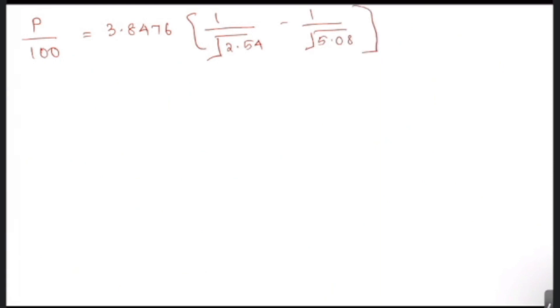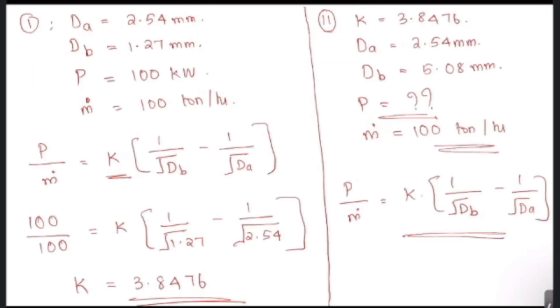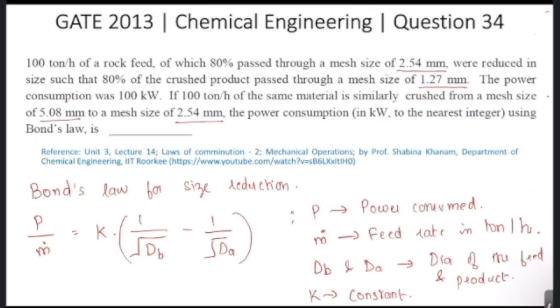And if we solve for this P, we can get the power consumed. P is equal to 70.71 kilowatt. So the right answer here, which is the power consumed for this size reduction, is 70.71 kilowatt.